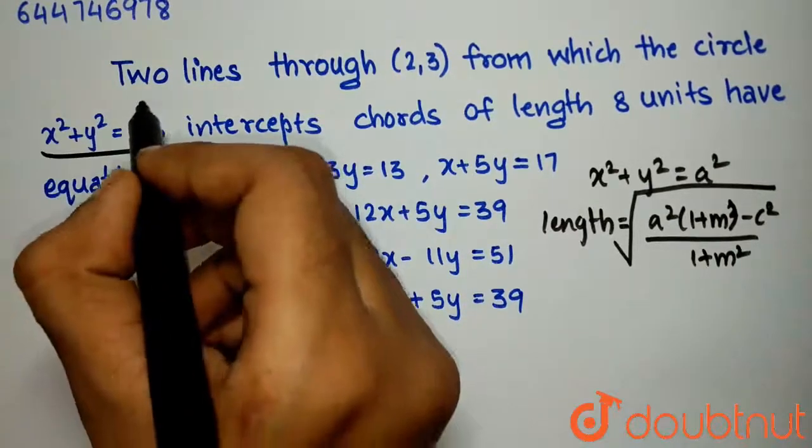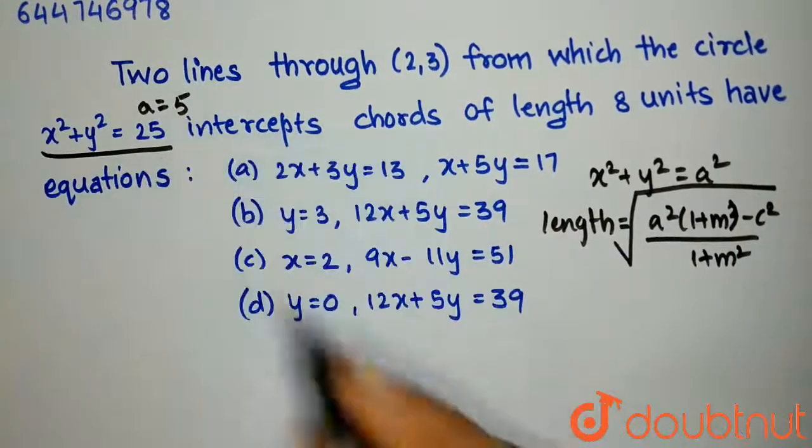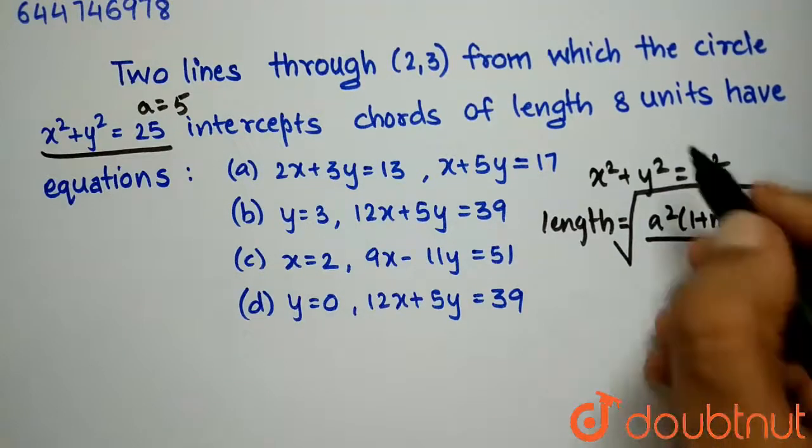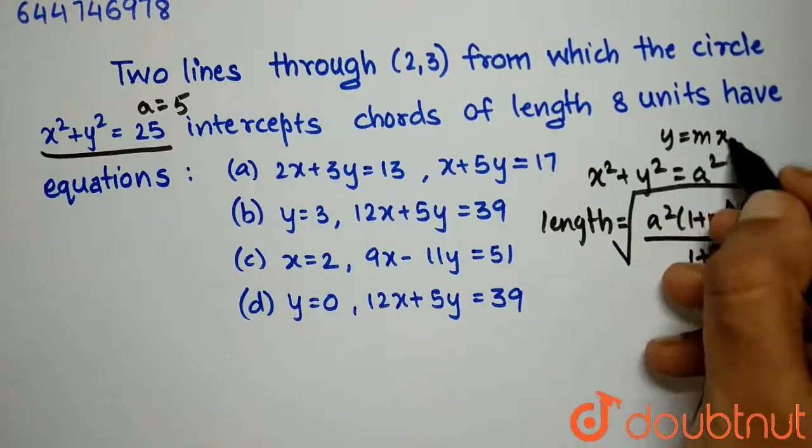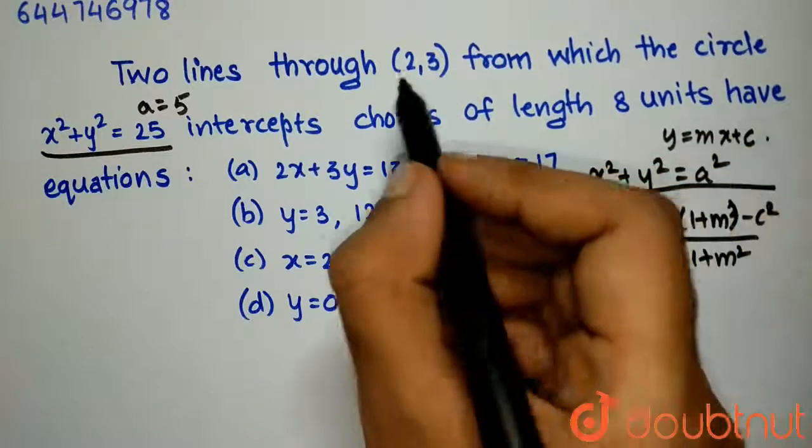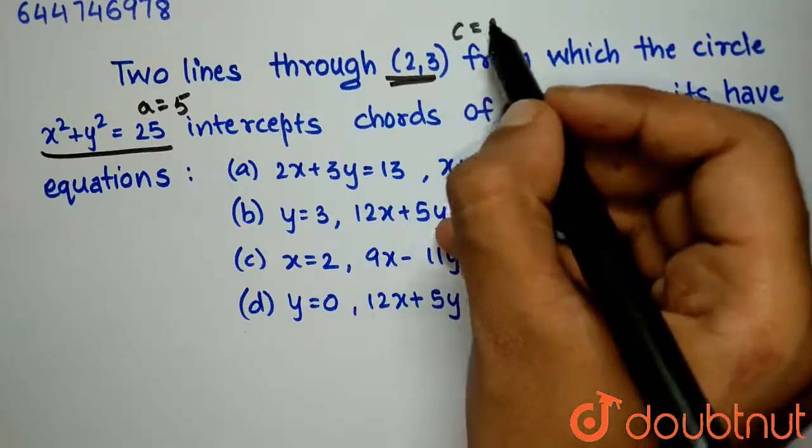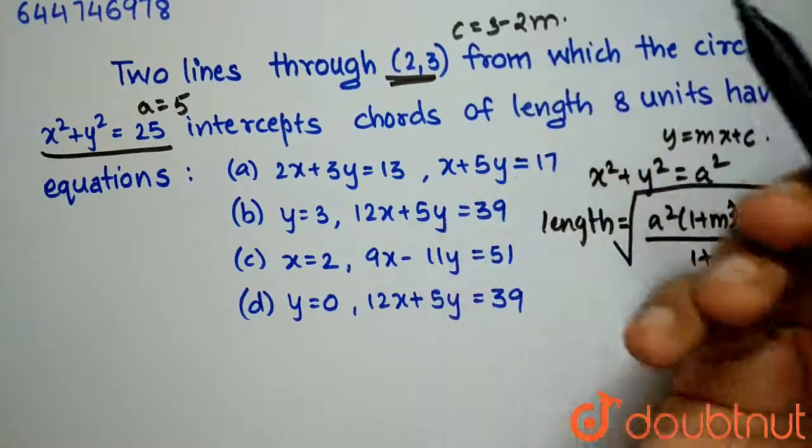If you see carefully, the value of a is nothing but 5, and your given equation is y=mx+c that passes through (2,3), so c=3-2m.